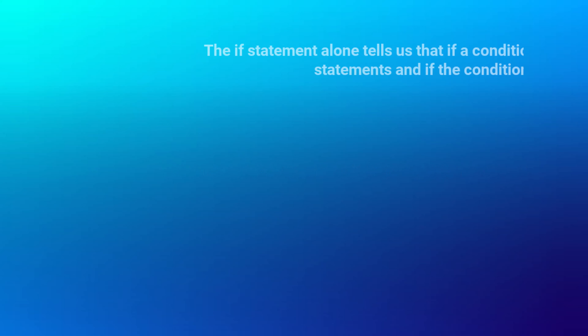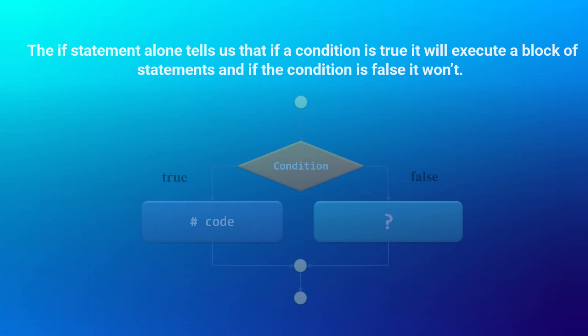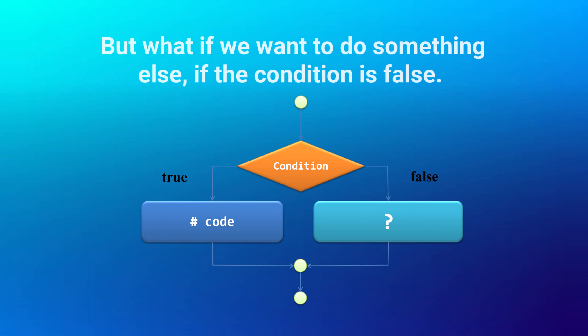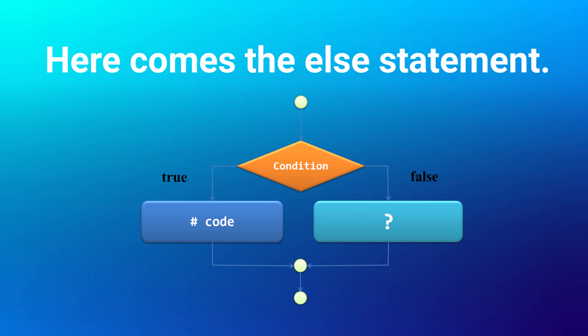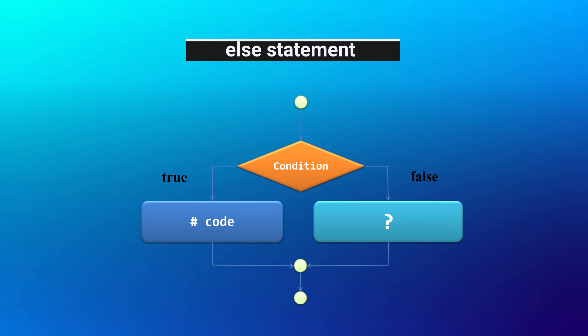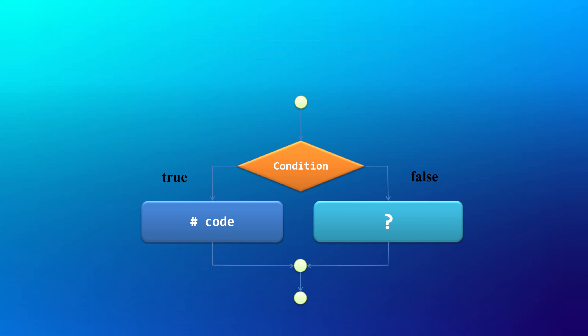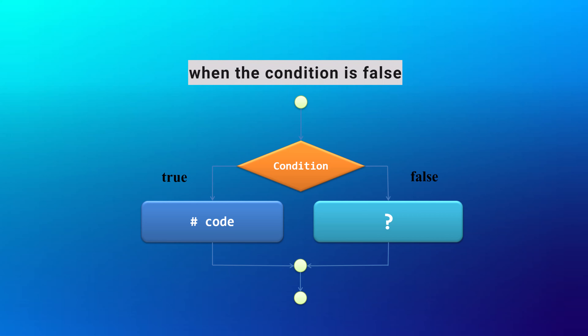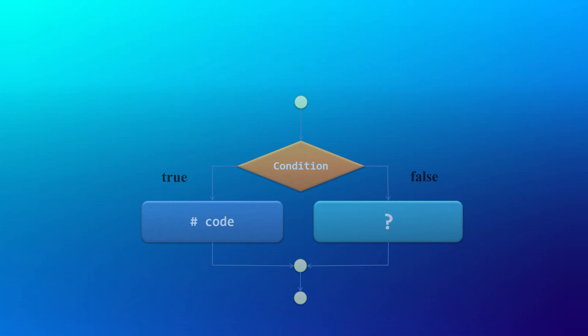In this section we will talk about if-else. The if statement alone tells us that if a condition is true it will execute a block of statements, and if the condition is false it won't. But what if we want to do something else when the condition is false? Here comes the else statement. We can use the else statement with the if statement to execute a block of code when the condition is false.